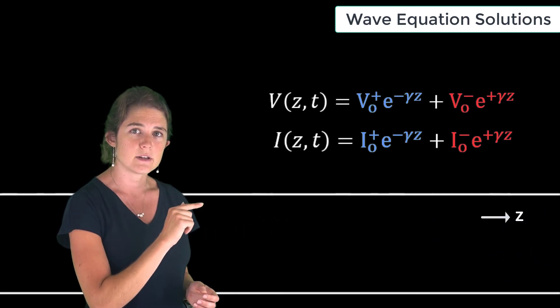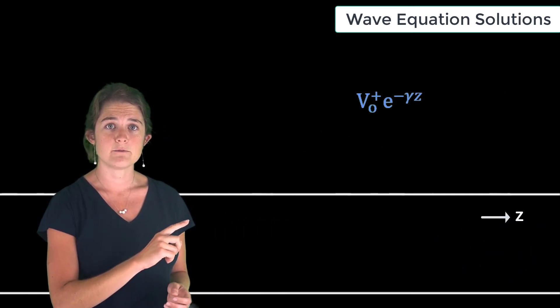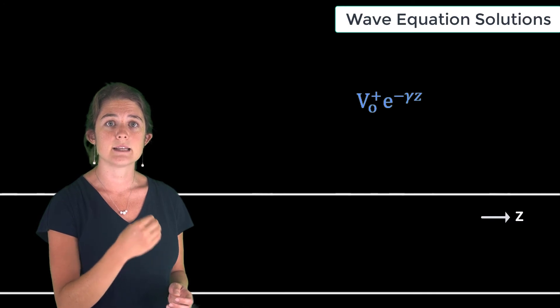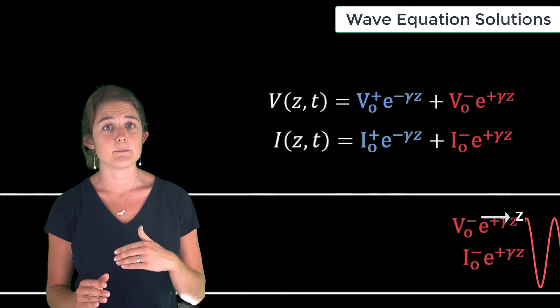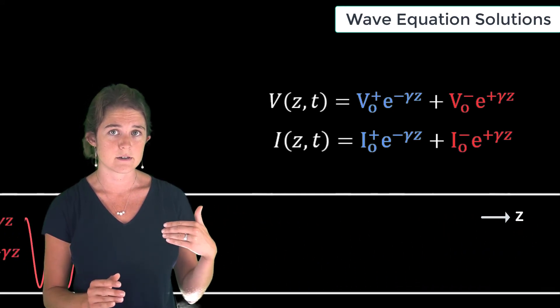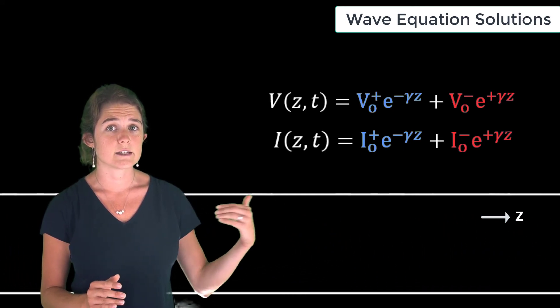also possible to have a signal propagating in the backward, or negative z direction. For the voltage, this signal is signified by this term: V₀⁻ times e to the plus γz. This is important to remember: the